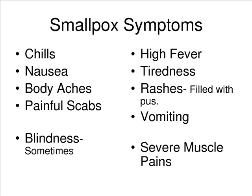A few days later, flat red spots appear first on your face, hands and forearms, and later on your trunk within a day or two. Many of these lesions turn into small blisters filled with clear fluid, which then turns into pus. Scabs begin to form 8 to 9 days later and eventually fall off, leaving deep, pitted scars. The rash is usually most noticeable on the palms of your hands and the soles of your feet.